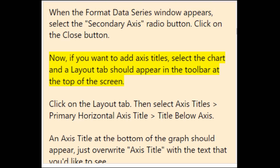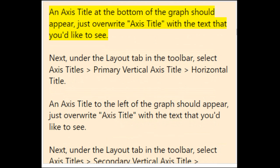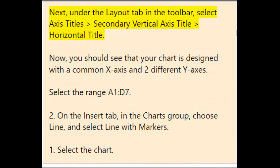To add axis titles, select the chart — a Layout tab should appear in the toolbar. Click the Layout tab, then select Axis Titles > Primary Horizontal Axis Title > Title Below Axis. An axis title appears at the bottom; overwrite it with your desired text. Next, under the Layout tab, select Axis Title > Secondary Vertical Axis Title > Horizontal Title for the right-side axis. Now your chart has a common x-axis and two different y-axes.